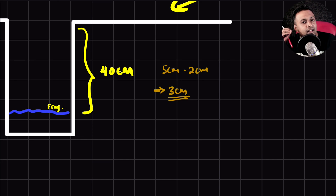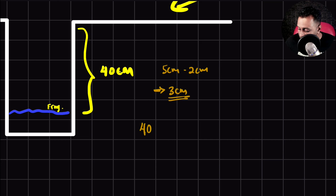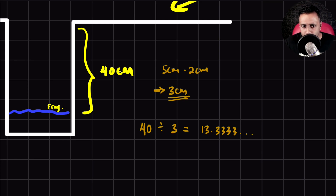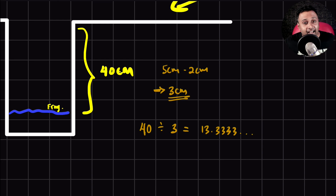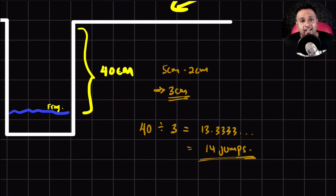The problem is when you get stuck with only the numbers. Out of 10 students, 9 do this: they take the total height of 40 cm and divide by 3 cm per jump, getting 13.333. They then think the frog needs 13.3 jumps, and since the frog can't jump 0.3 times, they round up and write the answer as 14 jumps. A lot of students will give this answer — but unfortunately, it is wrong.